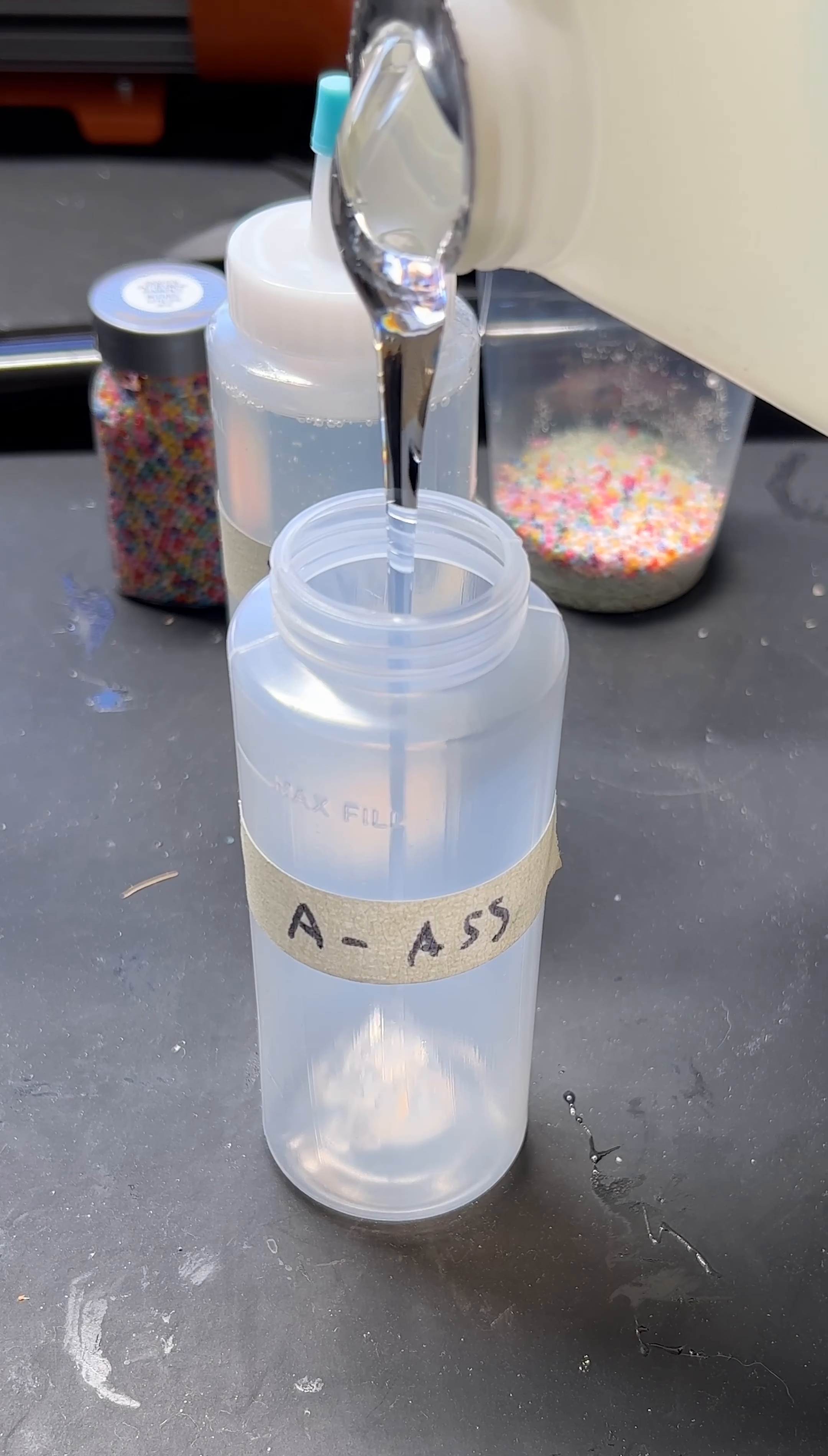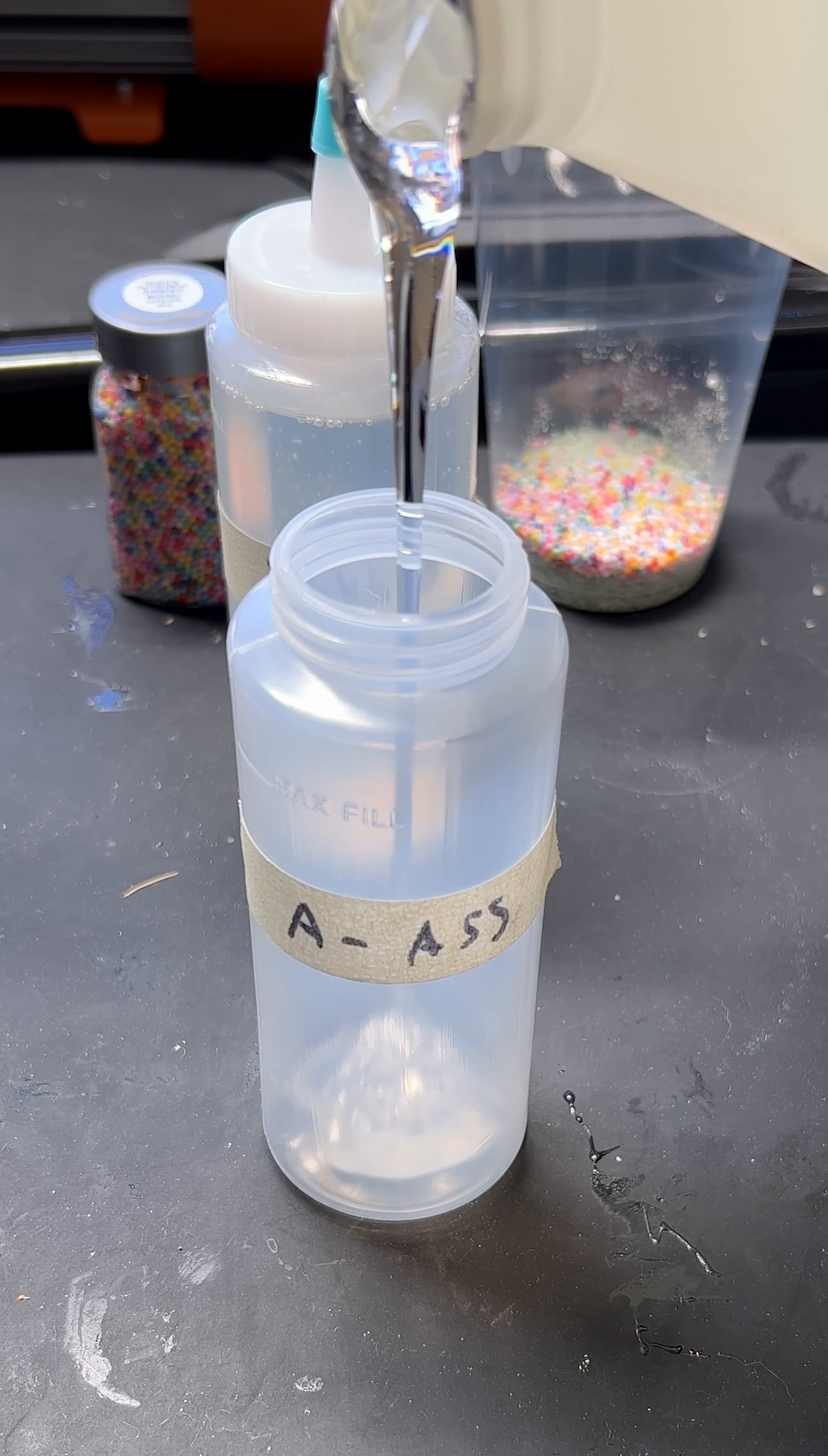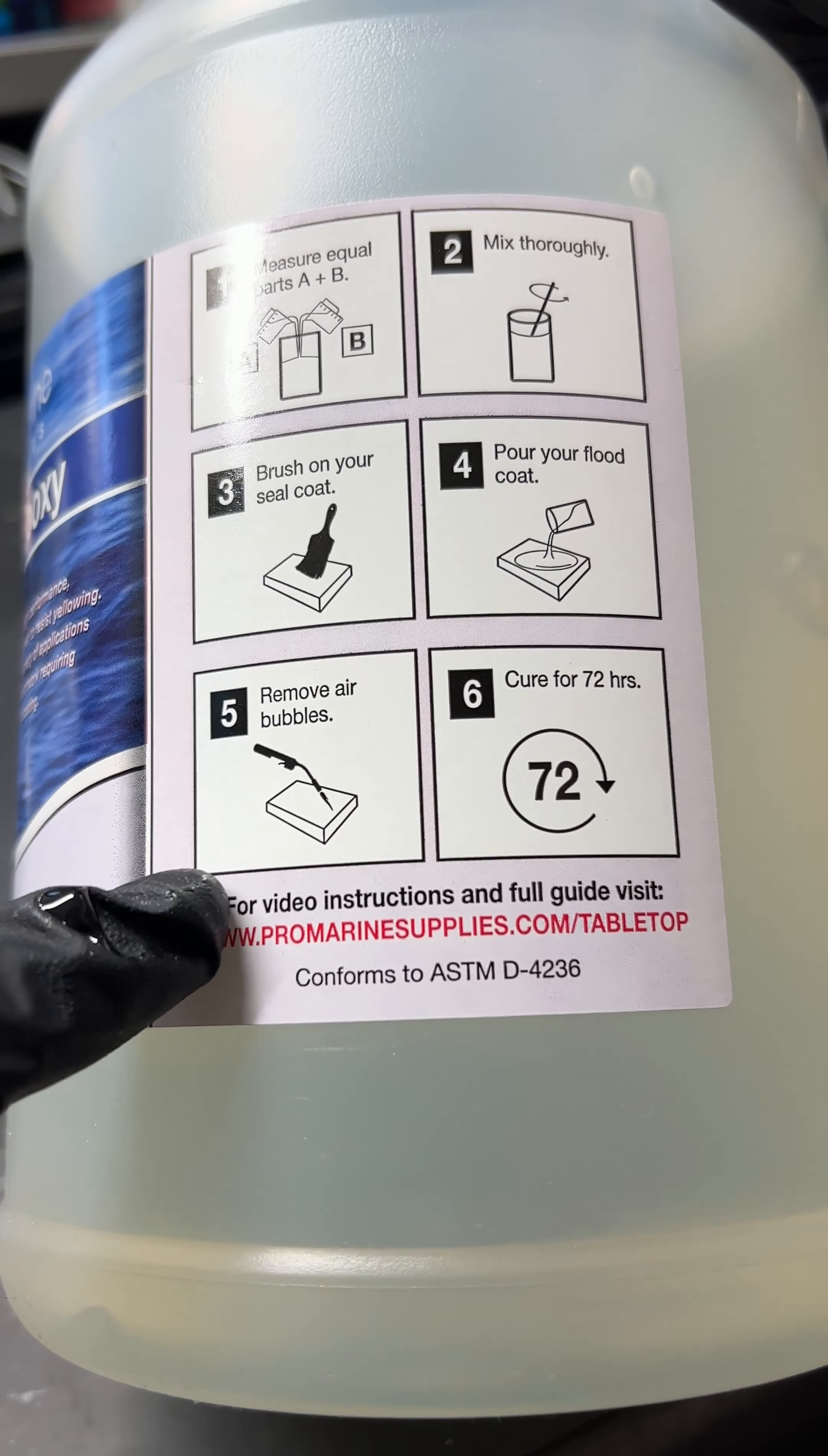I put it into smaller bottles labeled B and A. It's a 1 to 1 ratio, so equal A equal B. Make sure to follow the instructions on the side, I'm not going to do that.